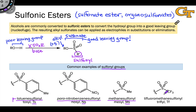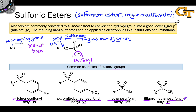And finally, a very electron-poor example of a sulfonyl group — similar in spirit to nosyl — is the trifluoromethane sulfonyl group, referred to as triflyl and abbreviated Tf. In this group, we have a trifluoromethyl group connected to the sulfonyl sulfur.